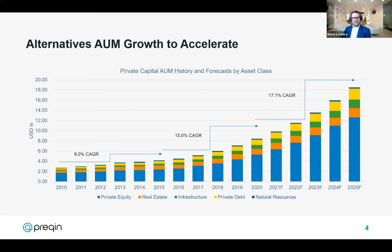We've baked in some stronger numbers for 2020, which is reasonable because although 2020 was a difficult year for many asset classes and managers, it was actually a really strong year in many regards. AUM growth in the past — and we expect in the future — has been driven by strong fundraising markets along with solid performance. 2020 was actually the fourth consecutive year with private capital fundraising above a trillion dollars. Low rates are continuing to drive allocations to alternative markets.